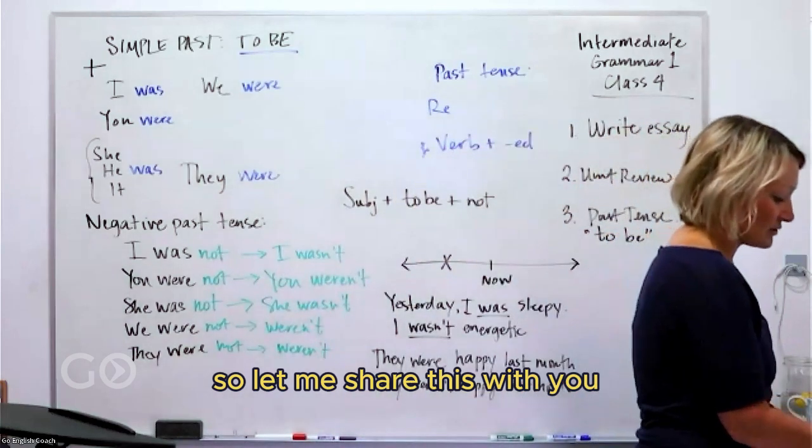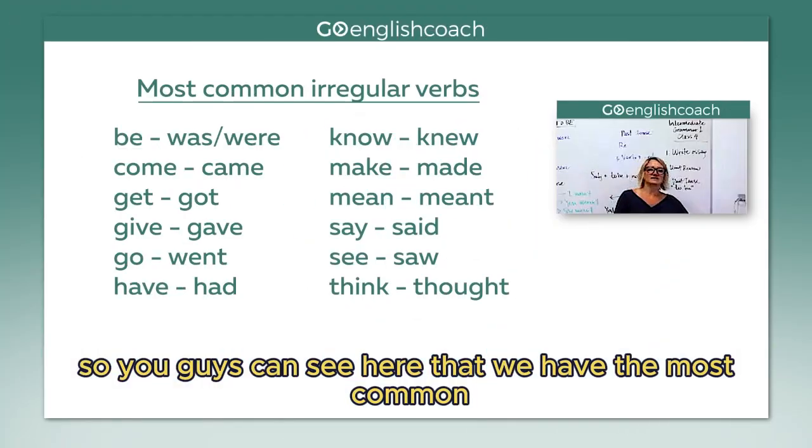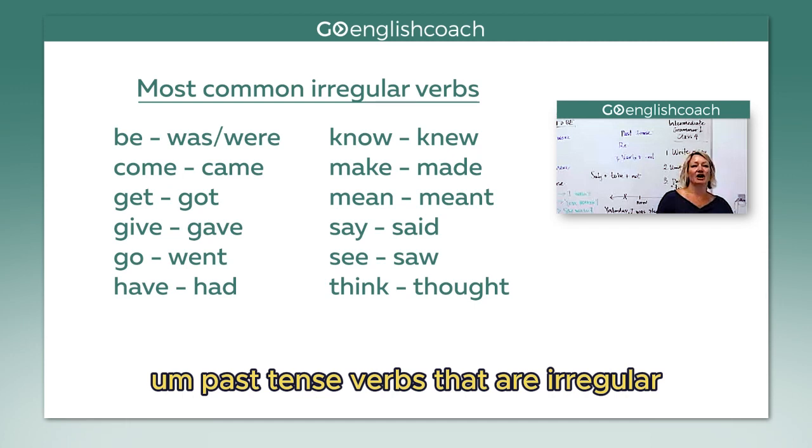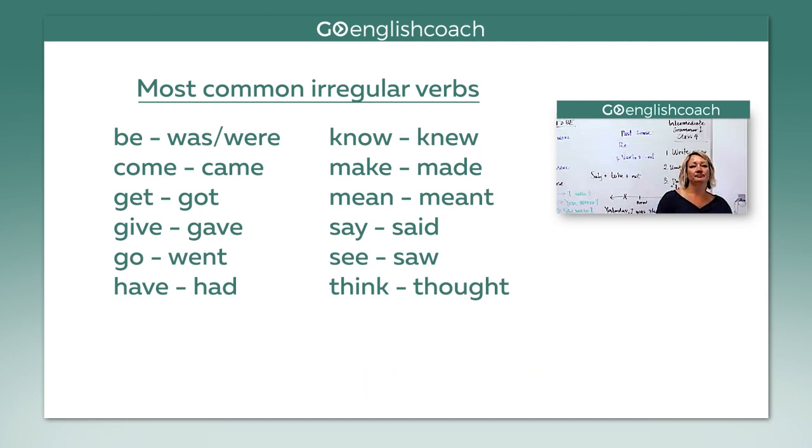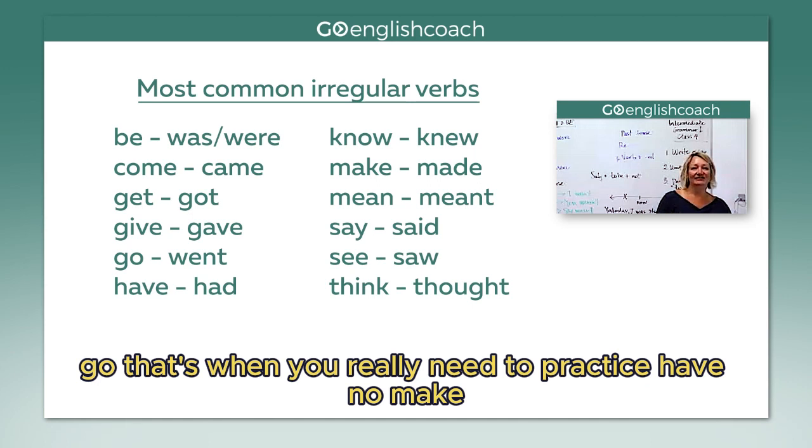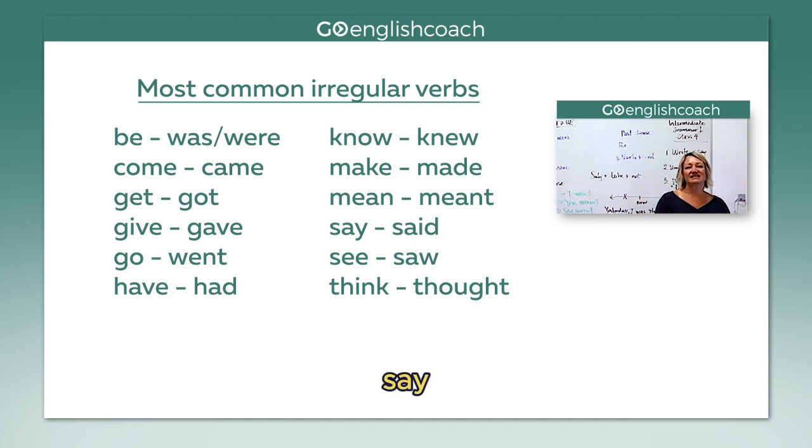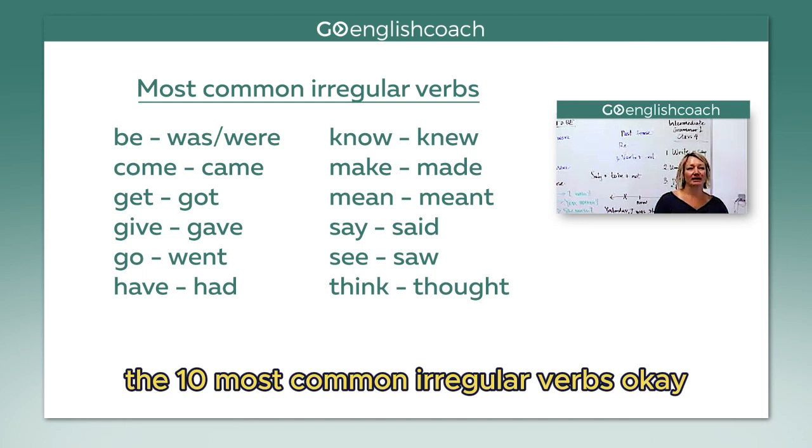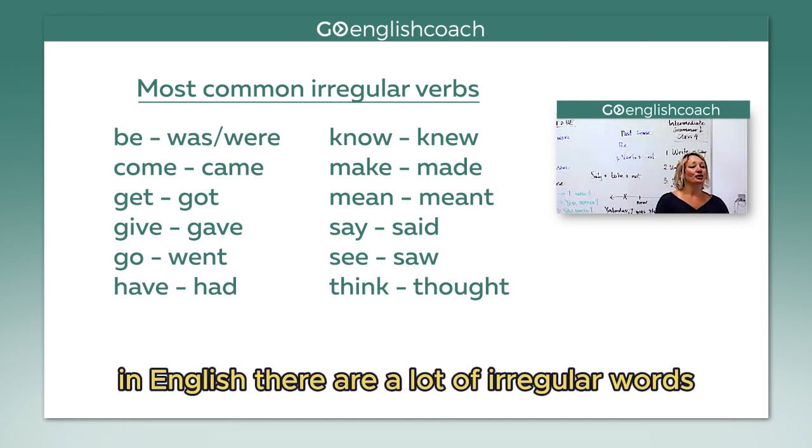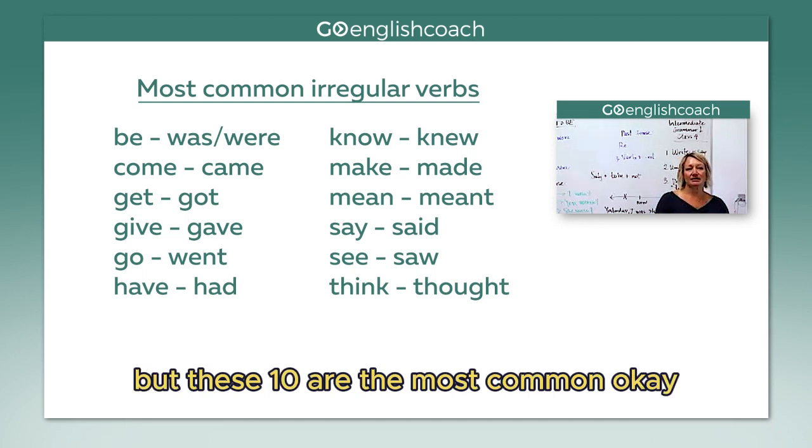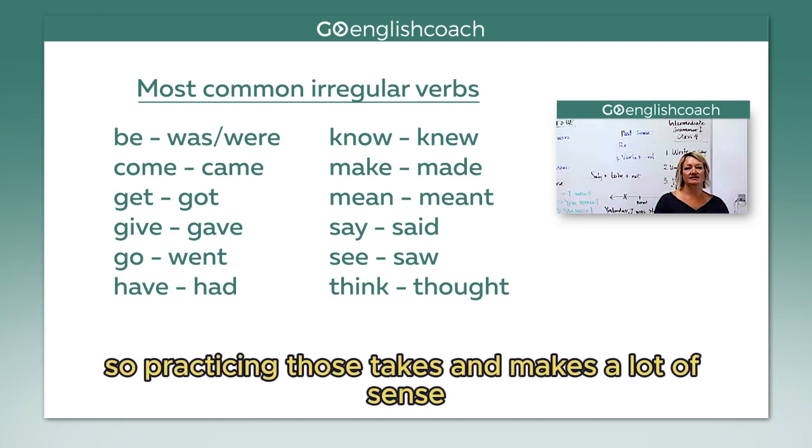Let me share this with you and then we will stop for the day so you guys can see here that we have the most common past tense verbs that are irregular. So the form of 'to be', come, get, give, go - that's one that you really need to practice - have, know, make, mean, say, see, and think. So take note of those, the 10 most common irregular verbs in English. There are a lot of irregular words but these 10 are the most common, so practicing those takes and makes a lot of sense.